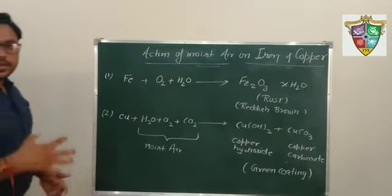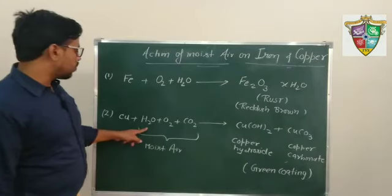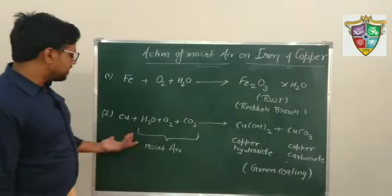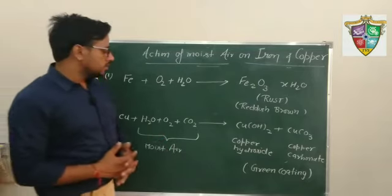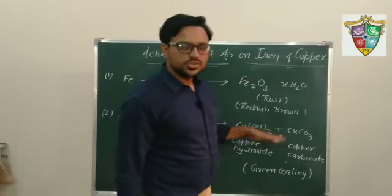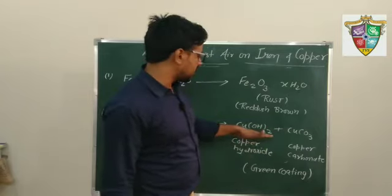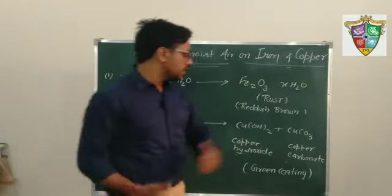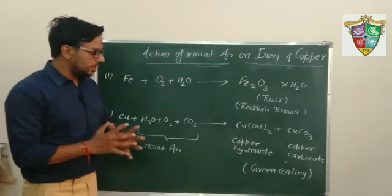And if we take copper Cu plus water plus oxygen plus carbon dioxide means moist air. Then it forms copper hydroxide and copper carbonate. This is the rust in case of copper, a mixture of copper hydroxide and copper carbonate. And it is green in color.